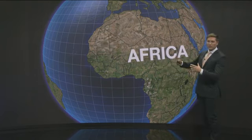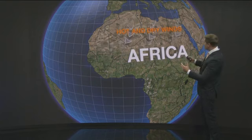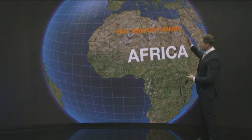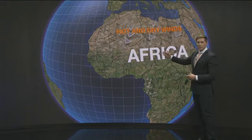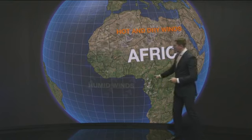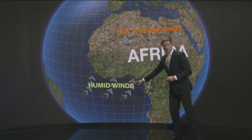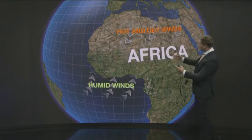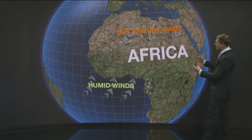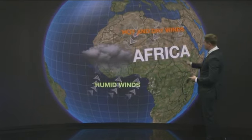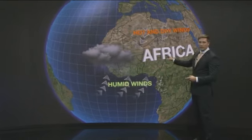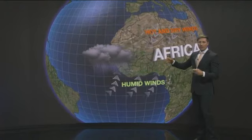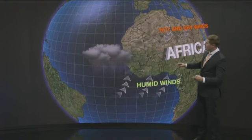It deals in part with the collision of winds that happen this time of year. Hot and dry winds from north Africa are oftentimes colliding with west and southwest humid winds that arrive with the west African monsoon. That generates clusters of thunderstorms that form over western Africa.